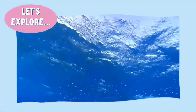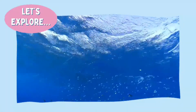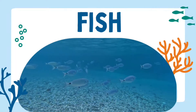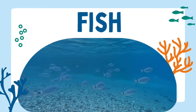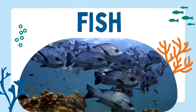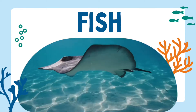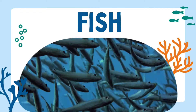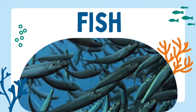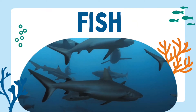Let's explore the sunlight zone a little more and see what else lives here. Fish live in every ocean on earth and have been living in the oceans for over 480 million years. There is an incredible variety of fish that can be found in oceans, from tiny sardines to huge sharks.